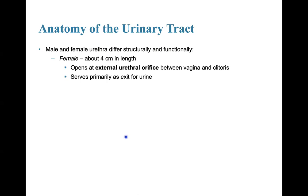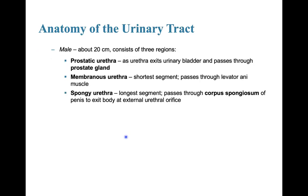Both the male and female urethra differ structurally and functionally. In females, it is about four centimeters in length, opens at the external urethral orifice between the vaginal opening and the clitoris, and serves primarily as an exit for urine. In the male, it is about 20 centimeters in length and consists of three regions: the prostatic urethra, as it exits the urinary bladder and passes through the prostate gland; the membranous urethra, the shortest segment, passing through the levator ani muscle; and the spongy urethra, the longest segment, passing through the corpus spongiosum of the penis to exit at the external urethral orifice.